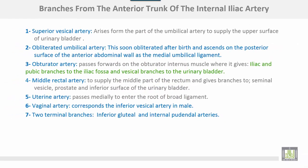Branches from the anterior trunk of the internal iliac artery: number one, the superior vesicle artery, which arises from the patent part of the umbilical artery to supply the upper surface of the urinary bladder. The obliterated umbilical artery is obliterated after birth and ascends on the posterior surface of the anterior abdominal wall as the medial umbilical ligament. The obturator artery passes forwards on the obturator internus muscle, giving iliac and pubic branches to the iliac fossa and vesicle branches to the urinary bladder. The middle rectal artery supplies the middle part of the rectum and gives branches to the seminal vesicle, prostate, and inferior surface of the urinary bladder.